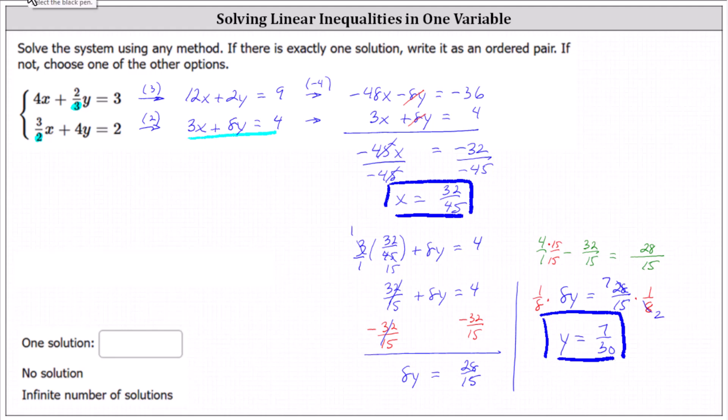This indicates our solution as an ordered pair is (32/45, 7/30), which also indicates we have one solution and the system is consistent and independent.